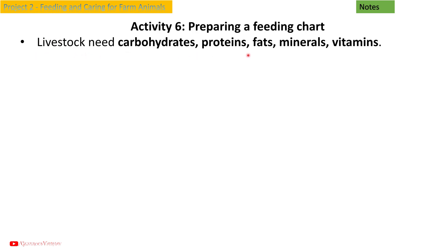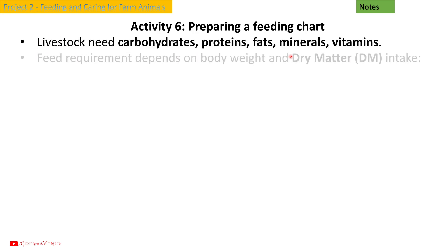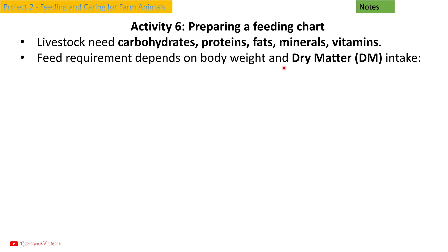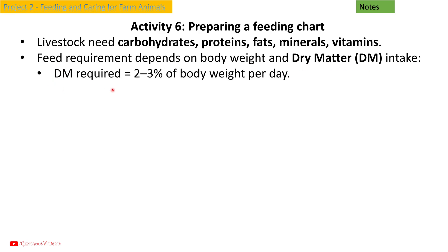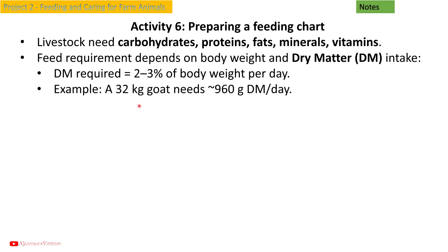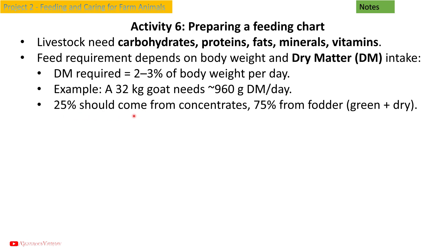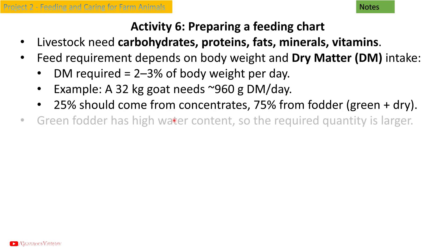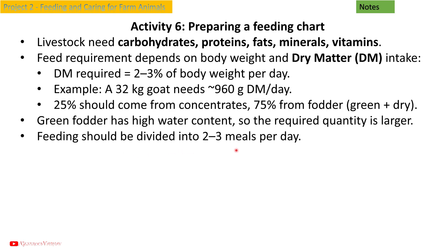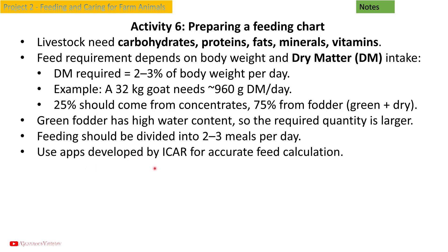Activity 6: Preparing a feeding chart. Livestock need carbohydrates, proteins, fats, minerals, and vitamins. Feed requirement depends on body weight and dry matter (DM) intake — DM required is 2 to 3 percent of body weight per day. For example, a 32 kg goat needs 960 grams DM per day. 25 percent should come from concentrates and 75 percent from fodder (green plus dry). Green fodder has high water content so the required quantity is larger. Feeding should be divided into 2 to 3 meals per day. Use apps developed by ICAR for accurate feed calculation.